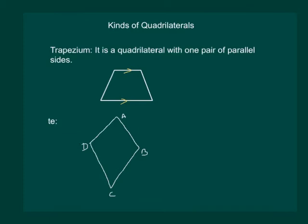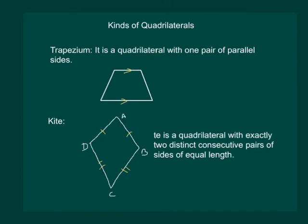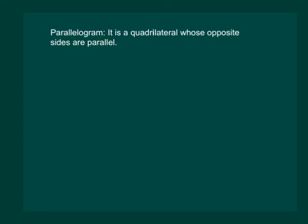Kite is another special type of quadrilateral. A kite has two distinct consecutive pairs — that means in a kite, AB is equal to AD, while BC is equal to CD. One pair of equal consecutive sides is AB and AD, and the other pair is BC and CD. Hence we define that a kite is a quadrilateral with exactly two distinct consecutive pairs of sides of equal length.